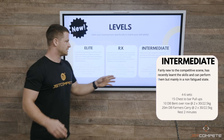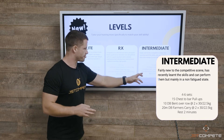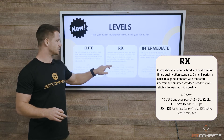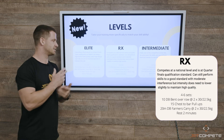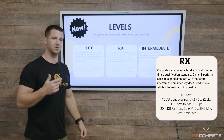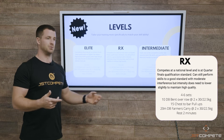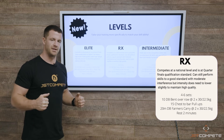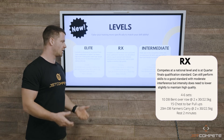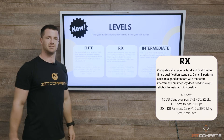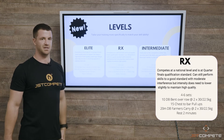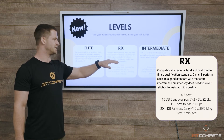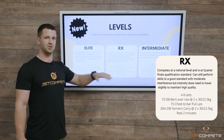Moving up one level for RX, using the same example, all we've done is swap the order: bent over row is first, then chest-to-bar pull-ups as the second exercise. So people following RX are doing their chest-to-bar pull-ups under a little bit of fatigue from the dumbbell bent over rows, then finishing with the dumbbell farmer's carry when fatigue is probably at its highest. There's a moderate level of fatigue and interference, but not so much that it completely breaks down.